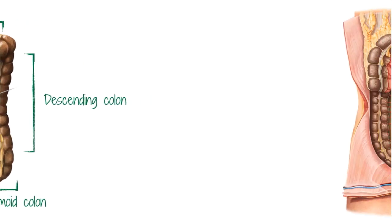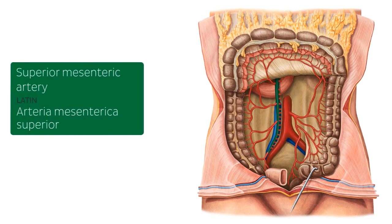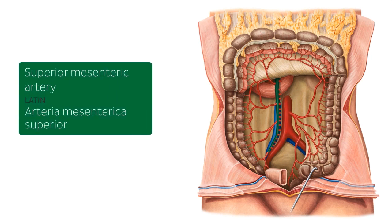Approximately the first half of the large intestine, which includes the vermiform appendix, the cecum, the ascending colon and part of the transverse colon, is supplied by blood derived from the superior mesenteric artery. The superior mesenteric artery is the second main branch of the abdominal aorta, arising about one centimetre below the origin of the celiac trunk, at the level of the intervertebral disc between the first and second lumbar vertebrae.